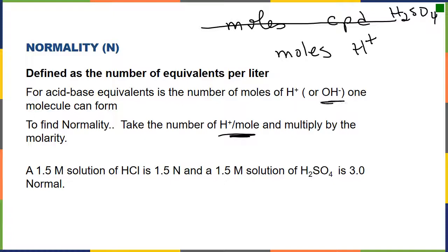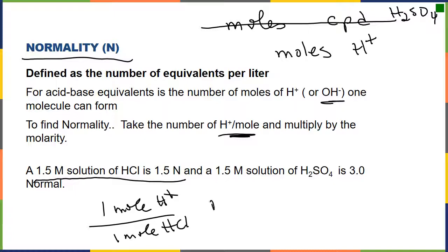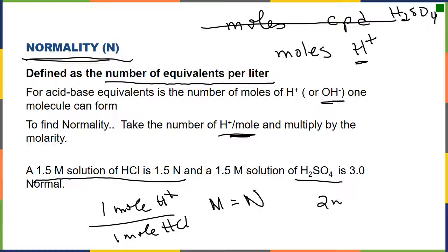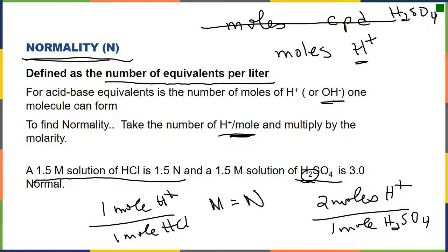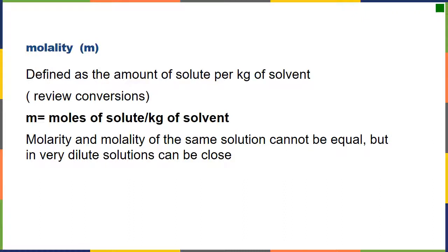We're looking at the number of moles of H⁺ or OH⁻ and figuring out what that does to our total amount per liter. For example, if I have 1.5 molar HCl — because there's one mole of H⁺ for every one mole of HCl — molarity M equals normality. Normality is defined as equivalents per liter, i.e., the active ingredient, which in this case is H⁺. For sulfuric acid, there are two moles of H⁺ per mole of H₂SO₄, so 1.5 molar H₂SO₄ gives us 3 normal.